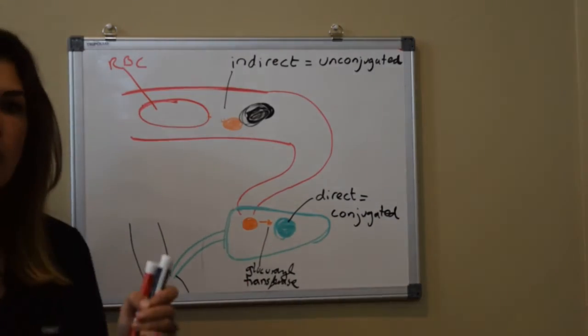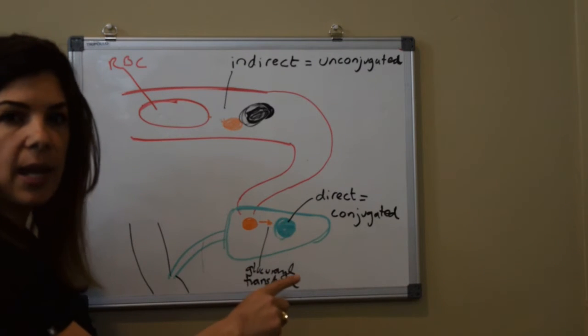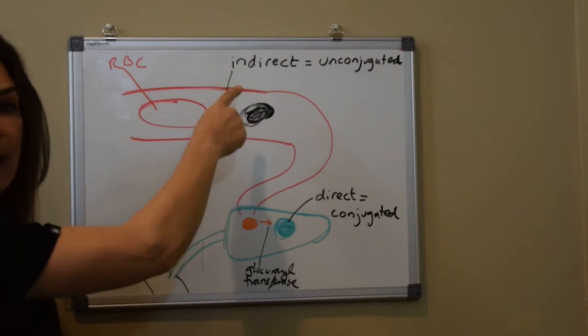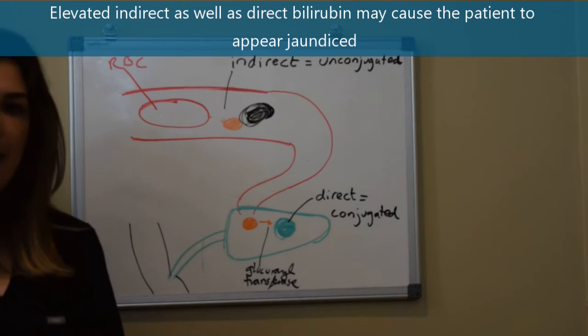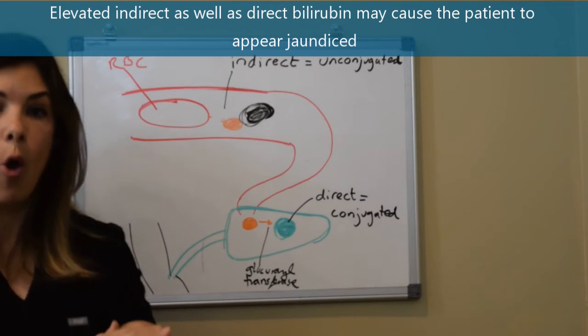A high direct bilirubin you should immediately be thinking there is something wrong with the liver. So we call it cholestasis when the direct bilirubin is elevated. It is not considered cholestasis when there is elevated indirect bilirubin.